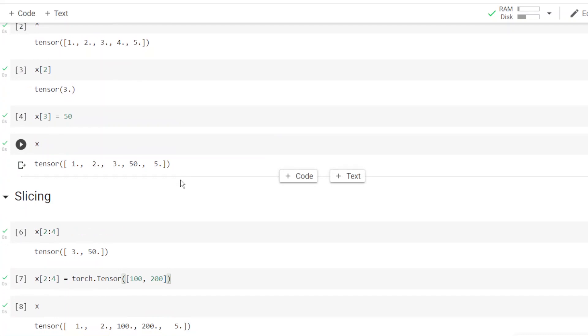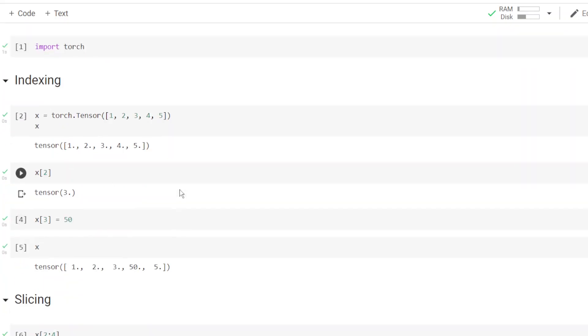So I hope you understood indexing and slicing. These are very useful operations and next we will look at some other useful operations that are performed in neural networks and those are made very simple if you use PyTorch.